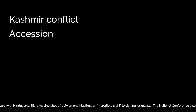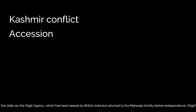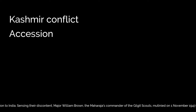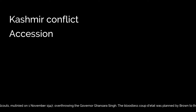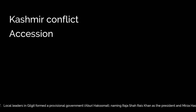In the north of the state lay the Gilgit Agency, which had been leased by British India but returned to the Maharaja shortly before independence. Gilgit's population did not favor the state's accession to India. Sensing their discontent, Major William Brown, the Maharaja's commander of the Gilgit Scouts, mutinied on 1 November 1947, overthrowing the governor Gansara Singh. The bloodless coup d'état was planned by Brown to the last detail under the code name Datta Khel. Local leaders in Gilgit formed a provisional government, naming Raja Shaukat Khan as president and Mirza Hassan Khan as commander-in-chief. However, Major Brown had already telegraphed Khan Abdul Qayyum Khan asking Pakistan to take over.